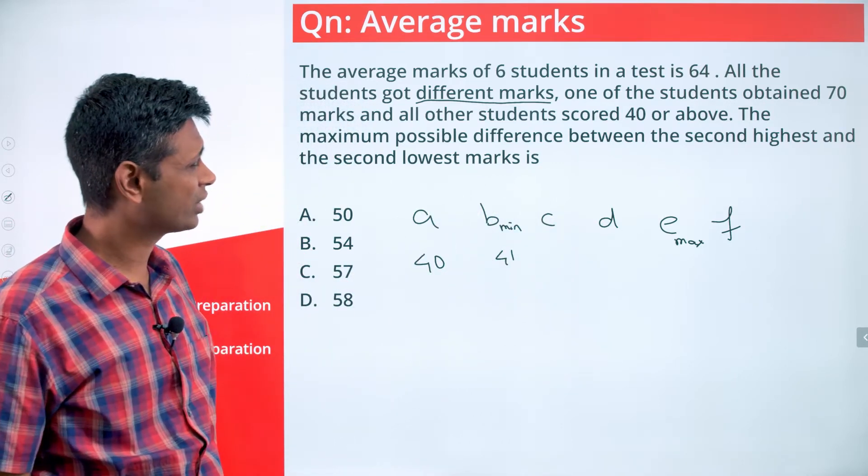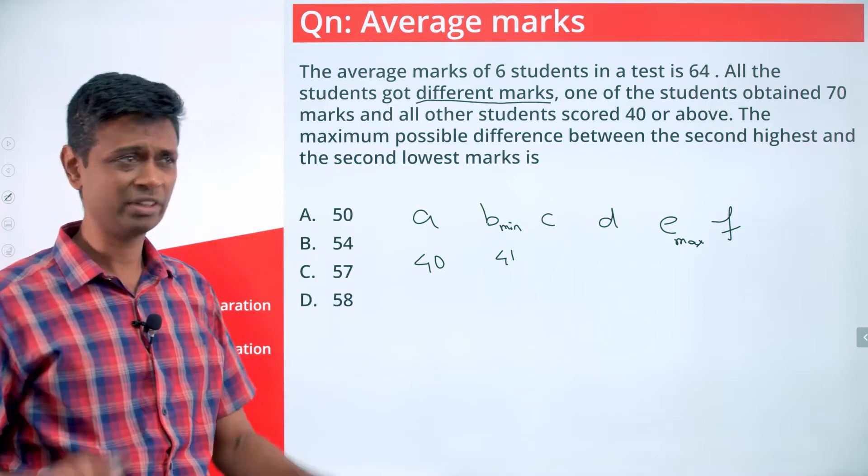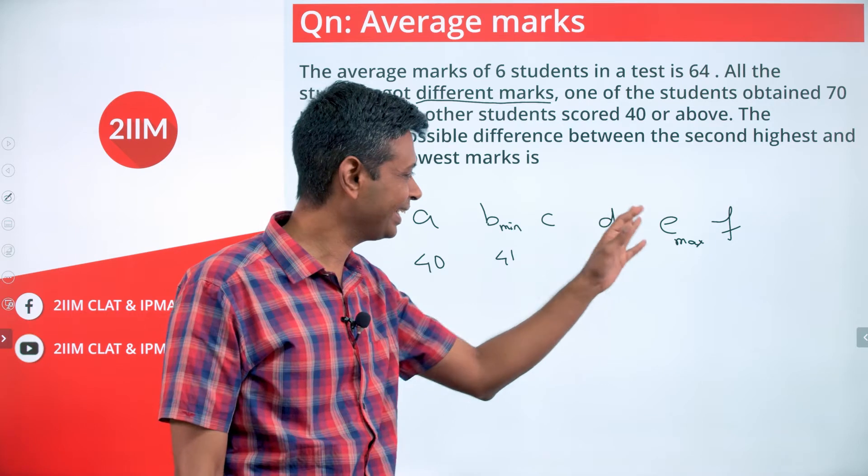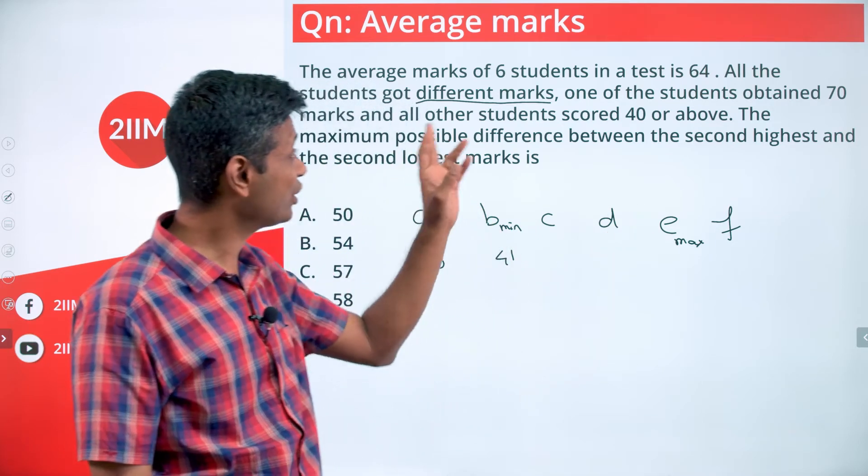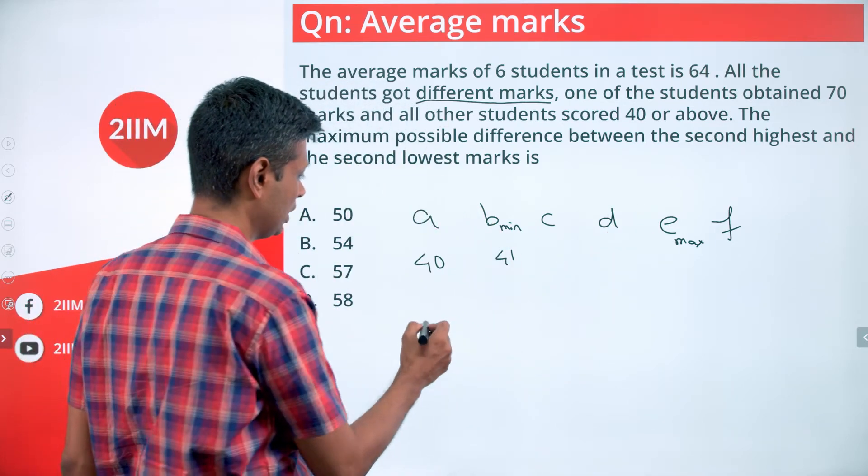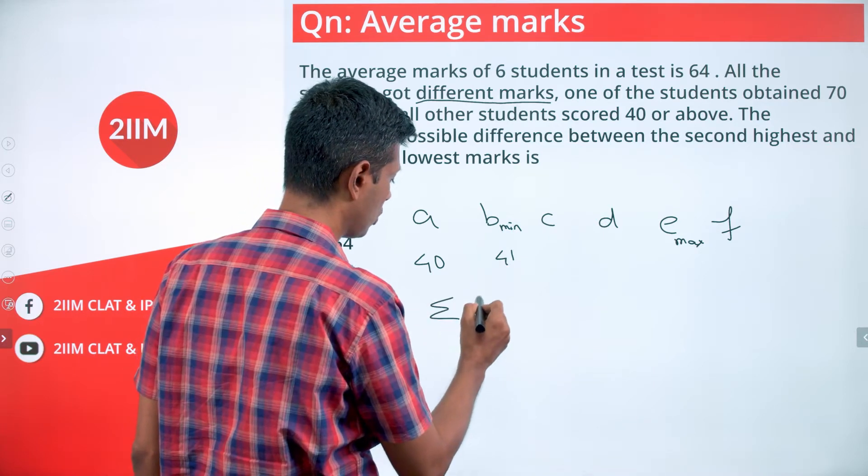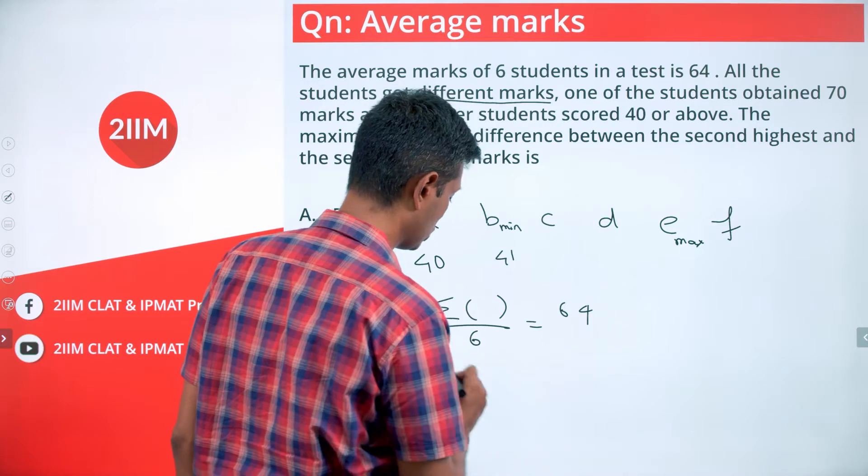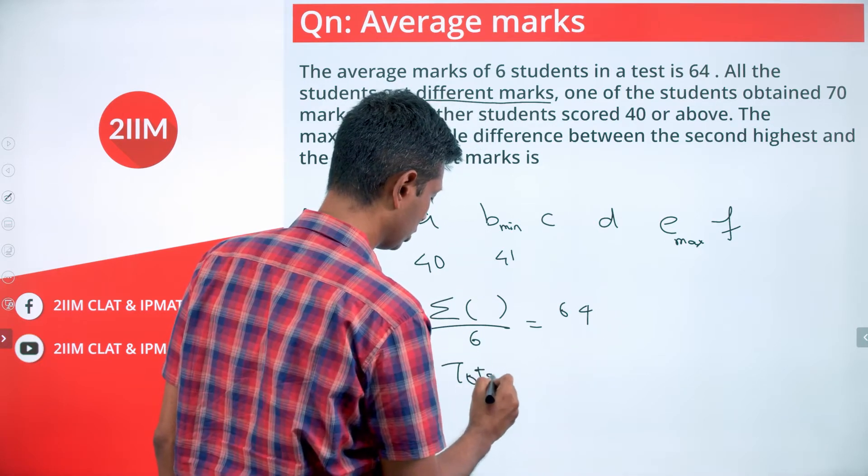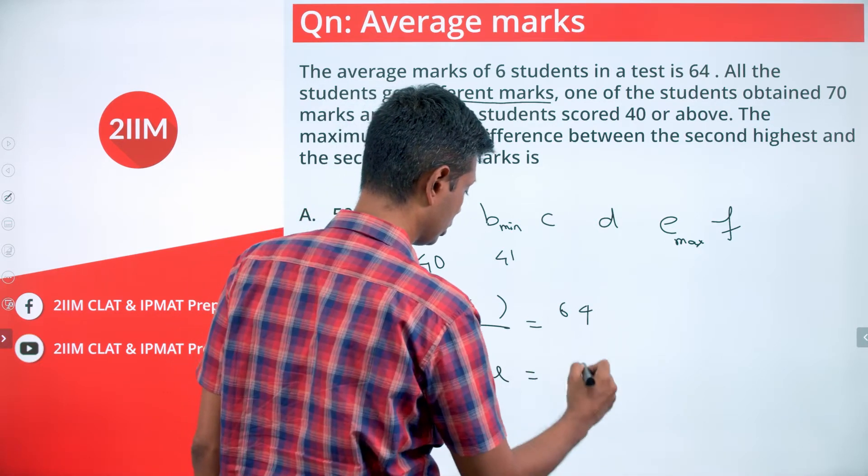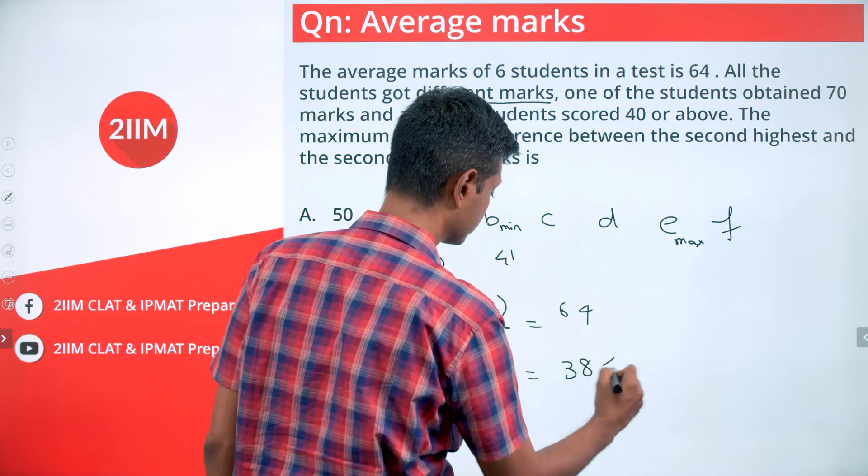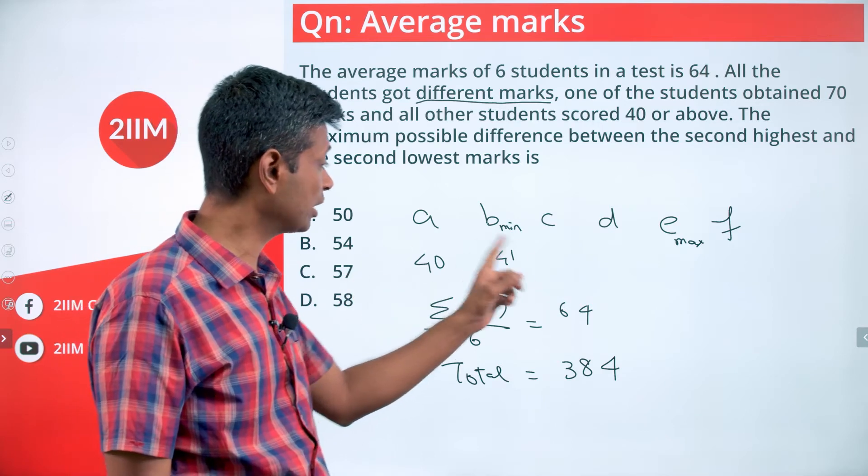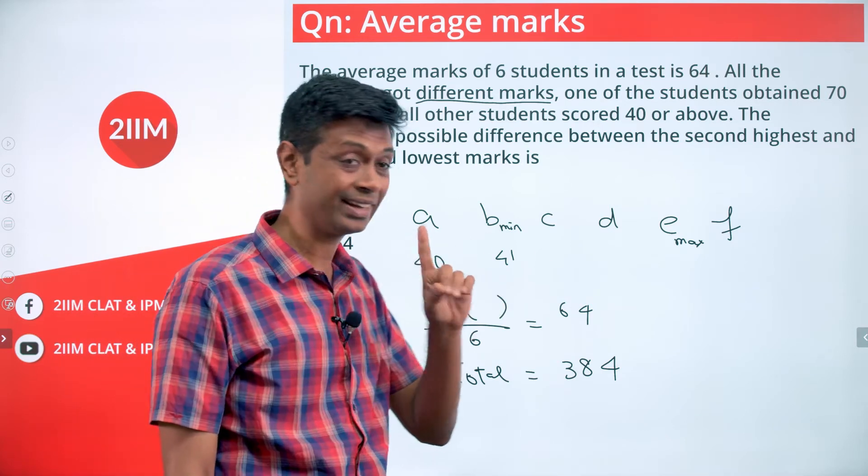One of the guys scored 70, so it'd be either c or d. I'm not going to think e scored 70. The average is 64, so a plus b plus c, the total of all of this divided by 6 is 64, or the total is 64 times 6, which is 384. In this total we already have three marks: 40, 41, and 70.